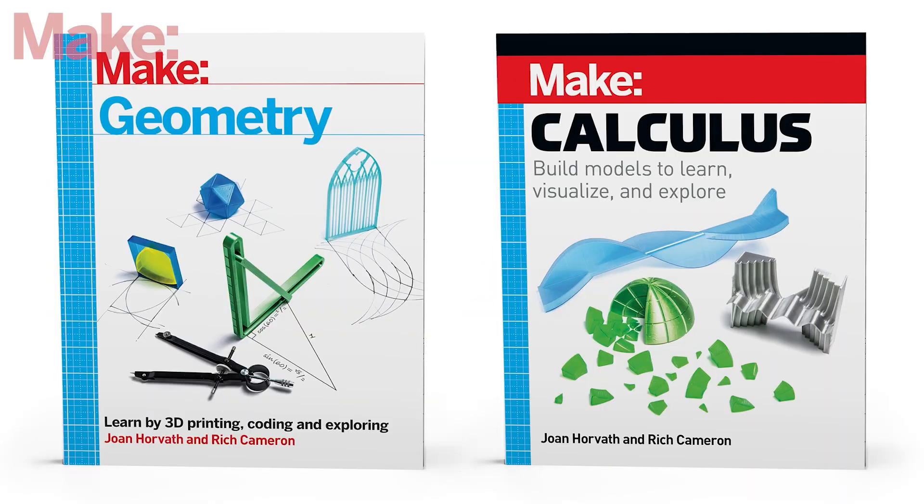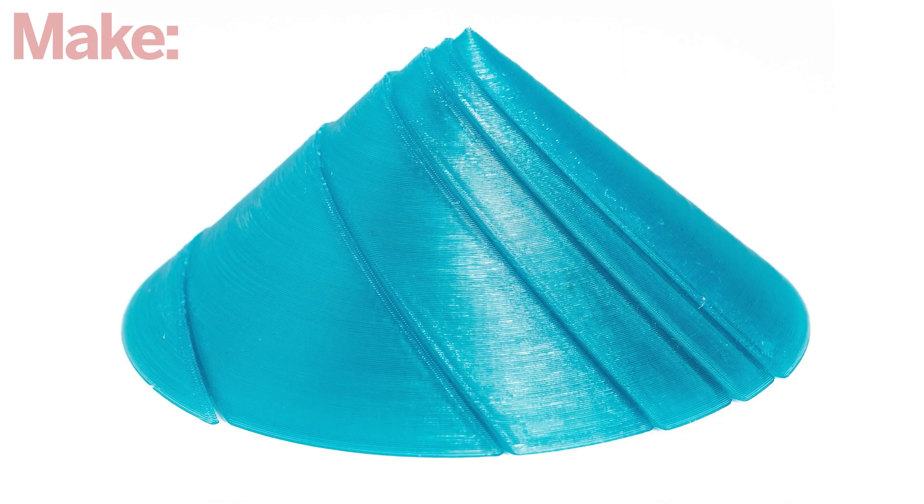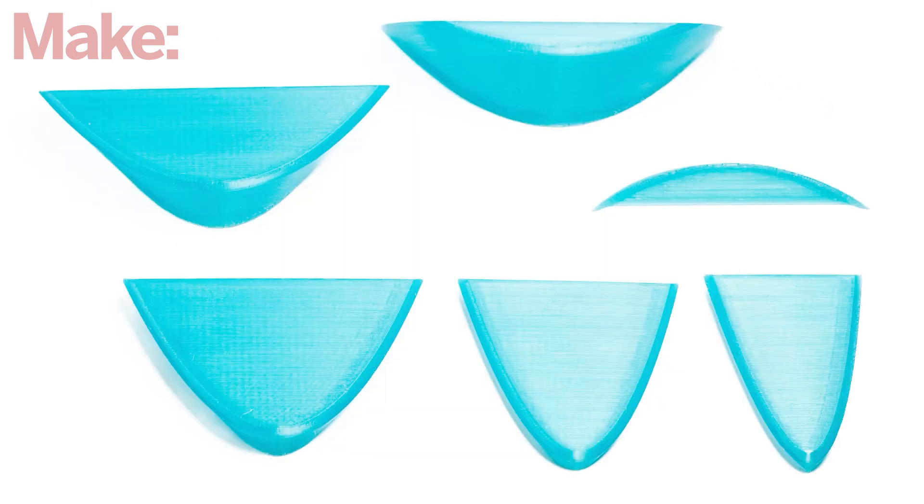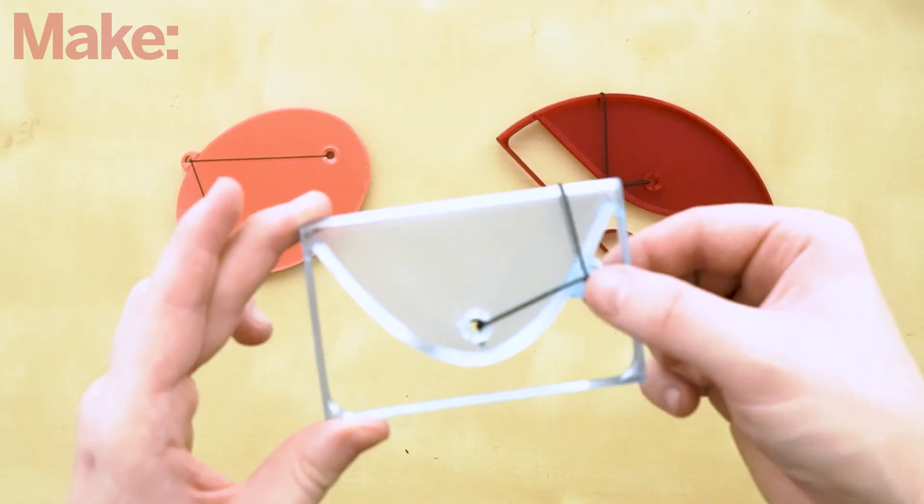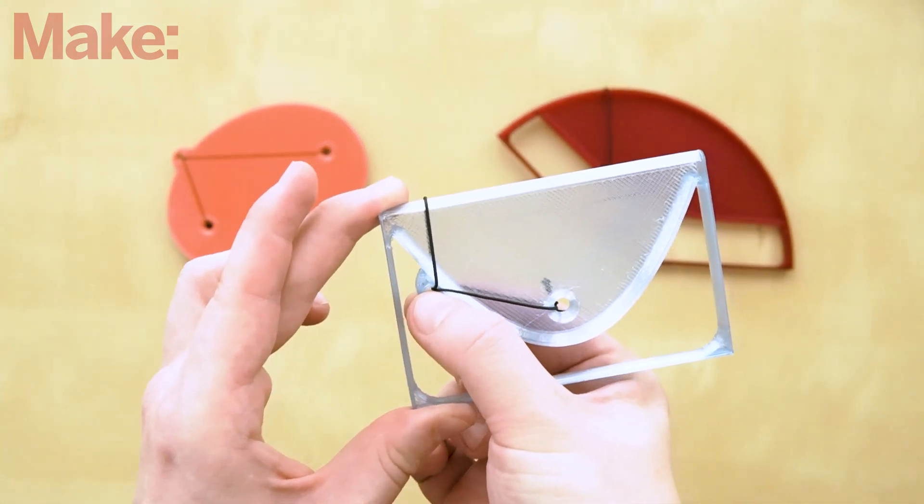We also wanted this book to be a bridge from our Make Geometry book to our Make Calculus book. To do that, the last part of the book covers some analytic geometry topics, with a focus on conic sections. We see how to think about and derive equations for ellipses, parabolas, and hyperbolas.